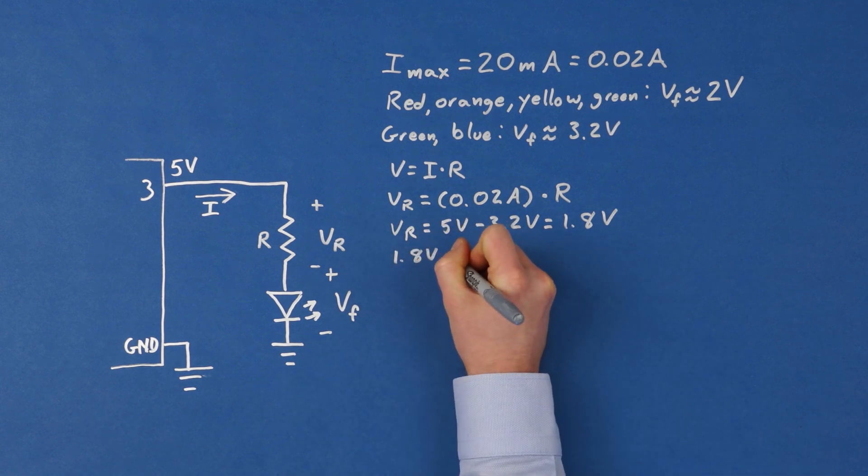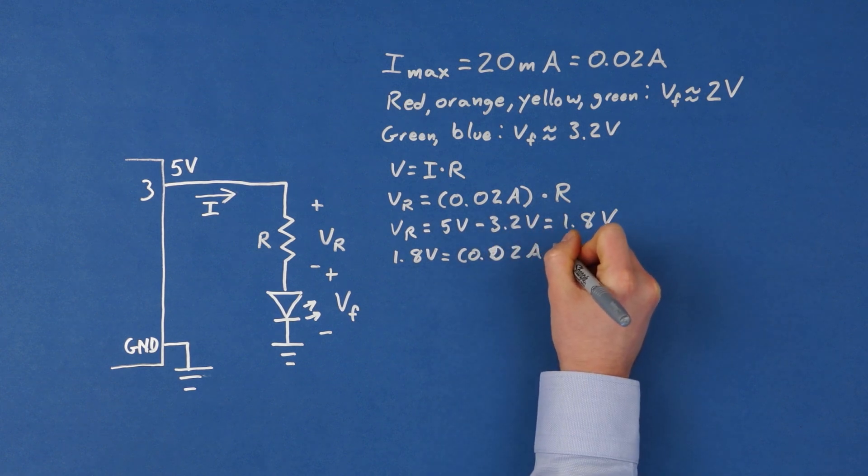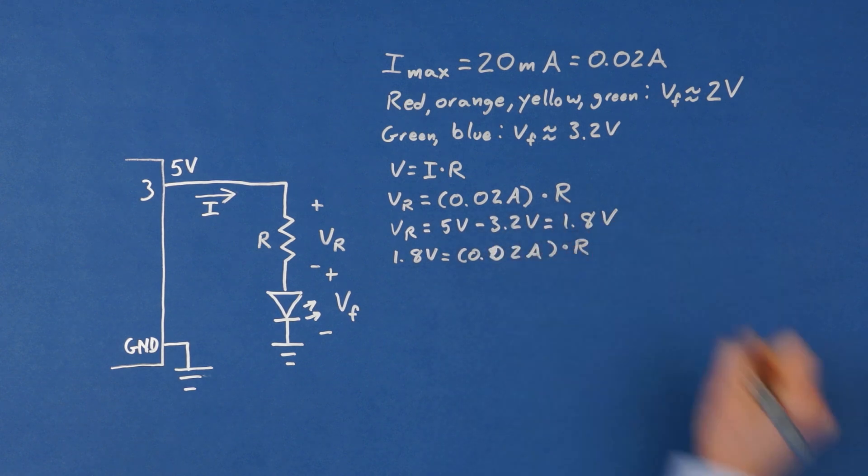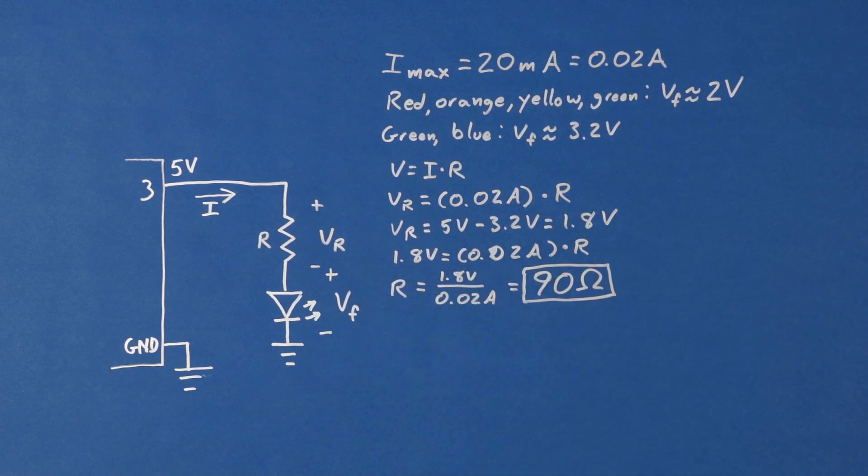Now we plug those values into Ohm's law. The voltage across the resistor, 1.8 volts, is equal to the maximum current, 20 milliamps, times the value of the resistor. Solve for R, and we get 90 ohms.